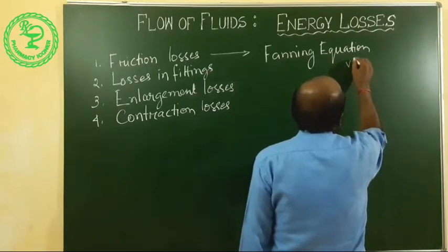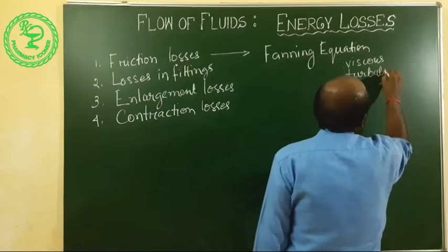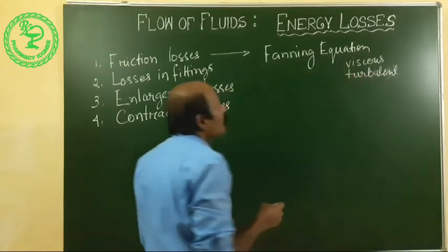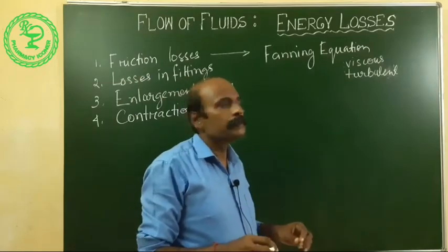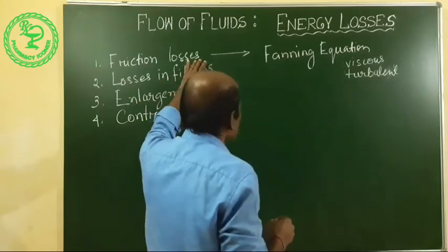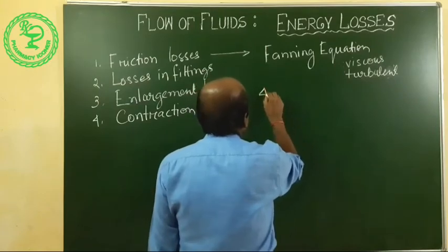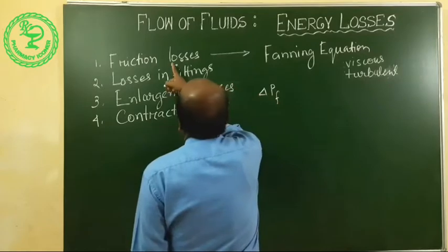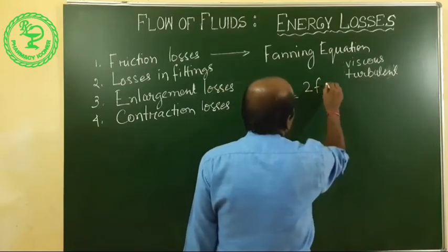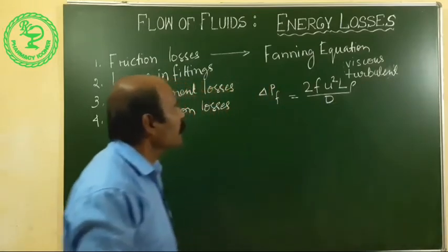In the case of viscous or turbulent flow through a straight pipe, we will use the Fanning equation. For frictional losses, there will be a pressure drop. The pressure drop due to friction, delta P_F, is equal to 2F·U²·L·ρ divided by D. This is the Fanning equation.